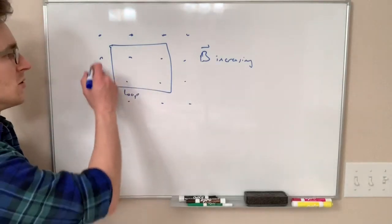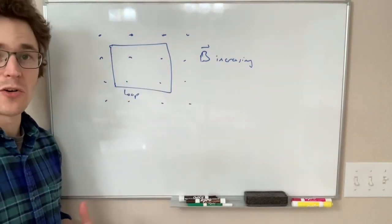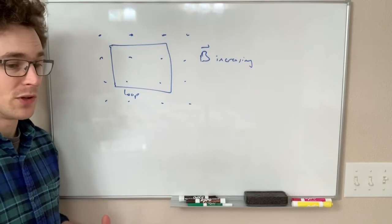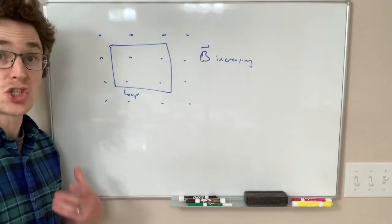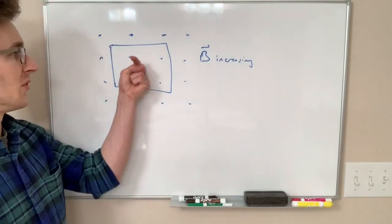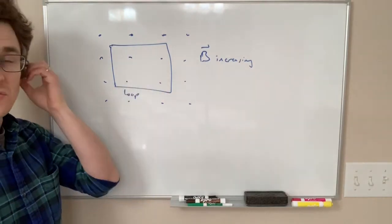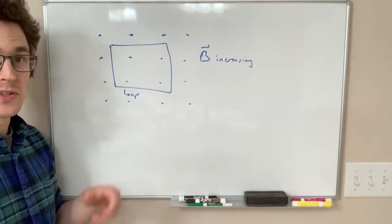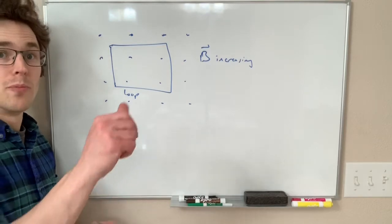Lenz's law says that the induced current in this loop is going to be in a direction that makes a magnetic field that will oppose that change. So if the B field is becoming more strongly out of the board, Lenz's law is going to have a current that is going to make a field opposing that,